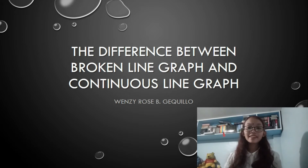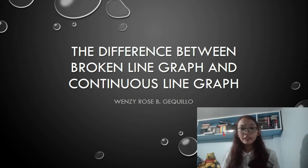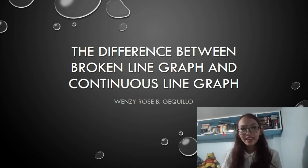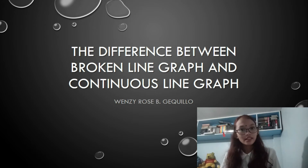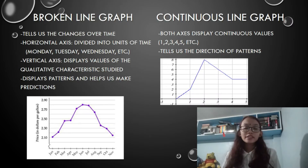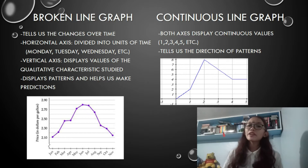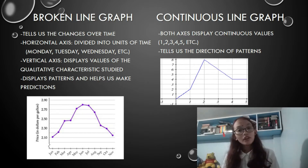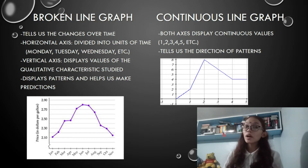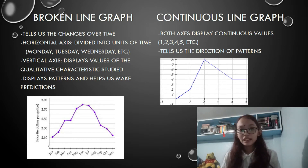I am Enderose Killio, and I am here to discuss the differences between the continuous line graph and the broken line graph. They may look the same, but they have differences. The broken line graph tells us the changes over time. It consists of broken lines and has a horizontal axis divided into units of time, like days of the week or months of the year.